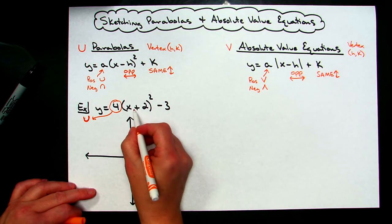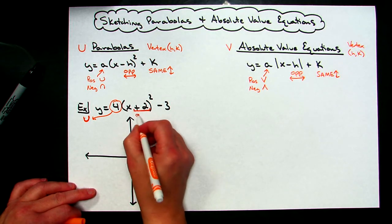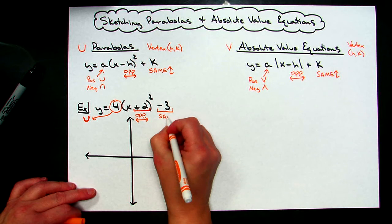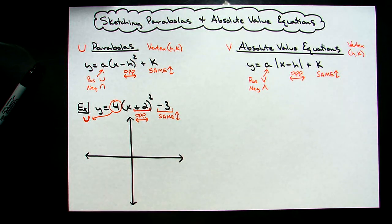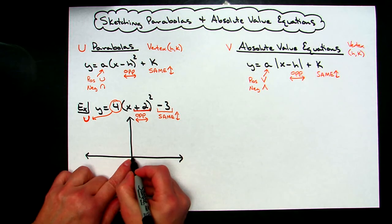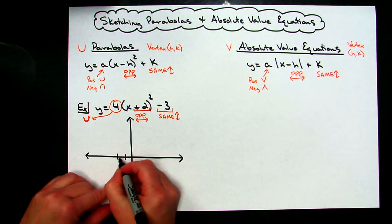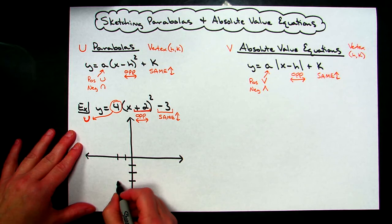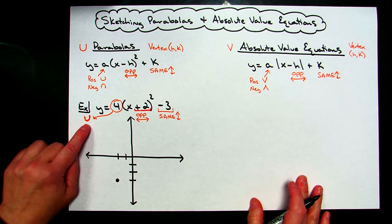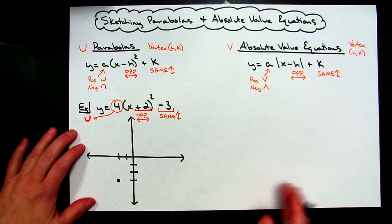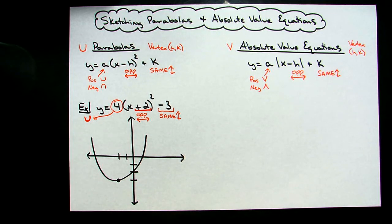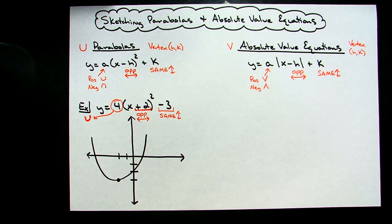The plus 2 tells me to shift opposite, so I go left 2 from the origin. The negative 3 tells me to shift the same, so I go down 3. That puts the vertex of my parabola at left 2, down 3. Since I'm doing a rough sketch I don't care how wide or narrow it is — I just indicate an upright parabola there. That's enough to see where it's increasing and decreasing, where our vertex is, and that it's concave up.